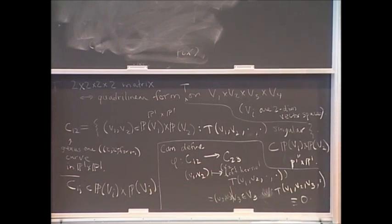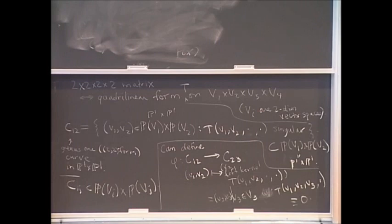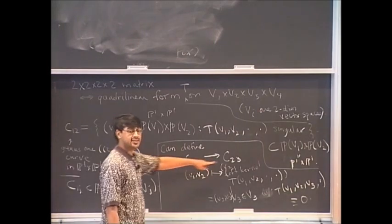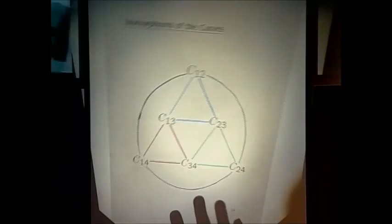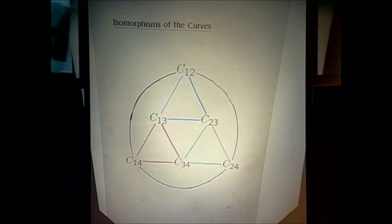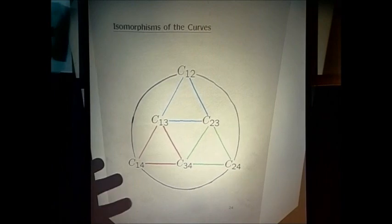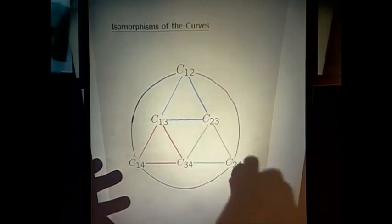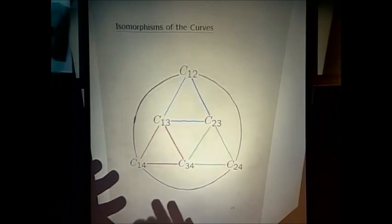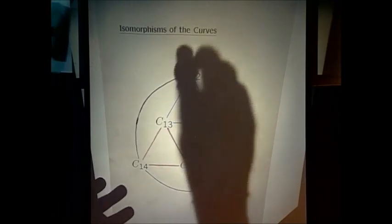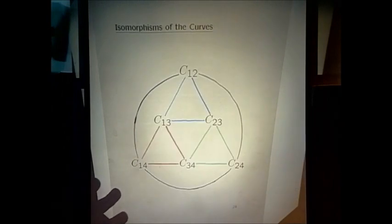For every C_ij, we have a map to C_jk. Here are the six curves, and all the various lines there are the isomorphisms. The question is, what happens if you start at C12, go to C23, then C24, and work your way back to C12 — do you end up with the identity? I thought surely it had to be the identity, but of course weird things do happen.